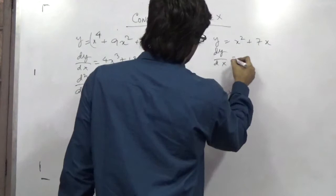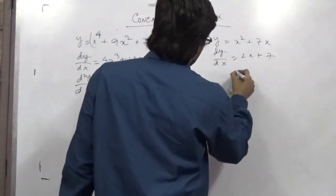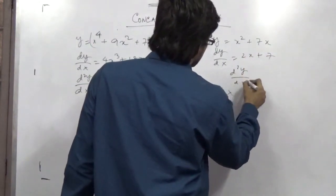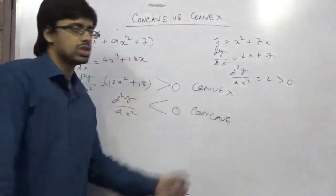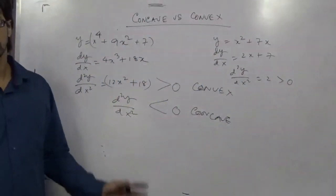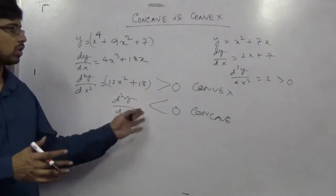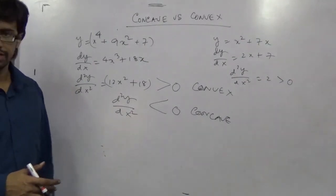So dy dx is what? 2x plus 7. d2y dx squared is simply 2. This is obviously greater than 0 so it is a convex curve. So second order greater than 0, convex. Second order less than 0, concave. And the line is like this.